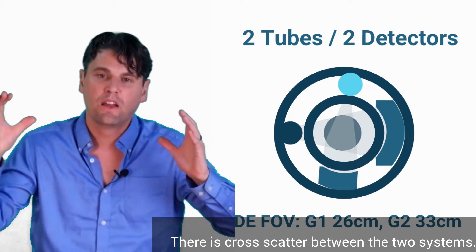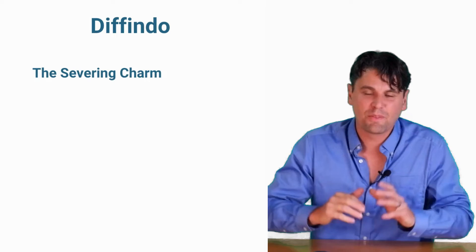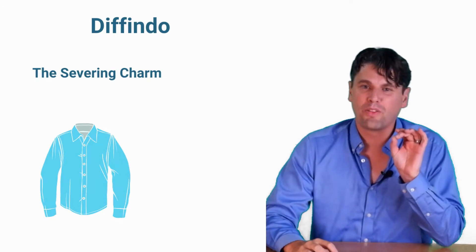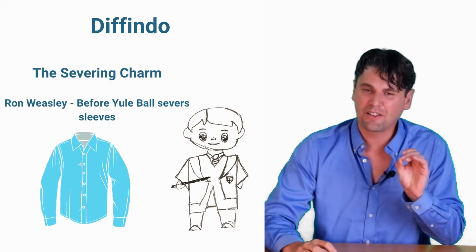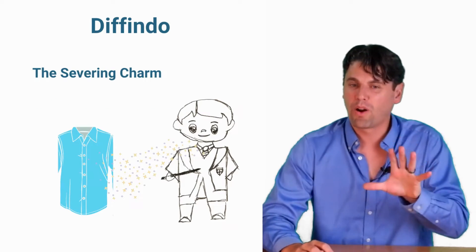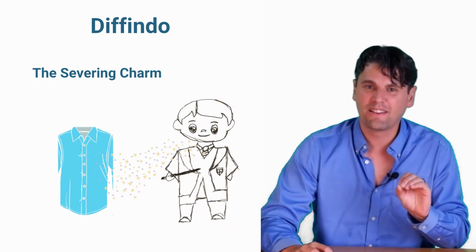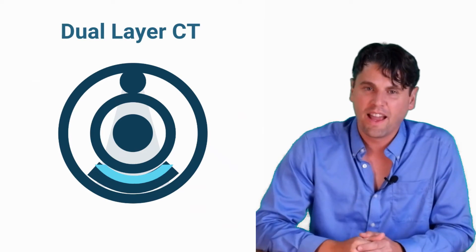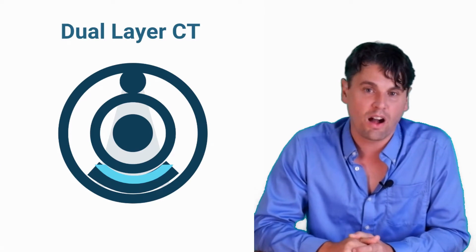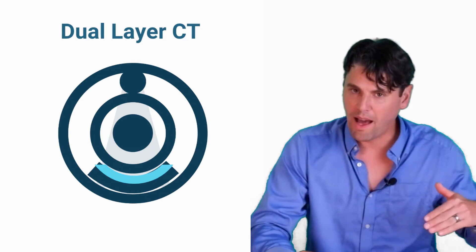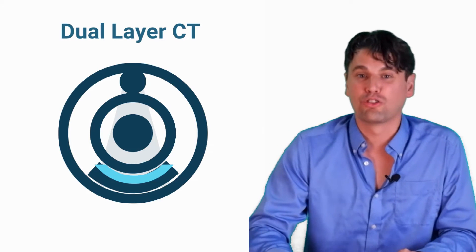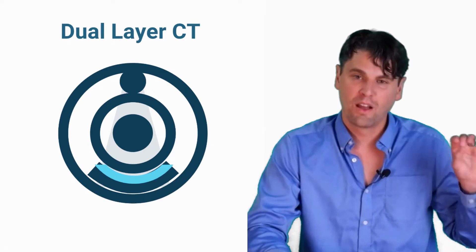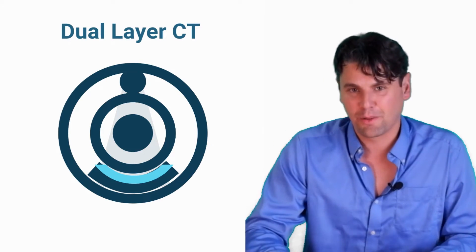Outside of that coverage, if you have a big lung region, you lose the ability to do dual energy imaging. The next spell is Diffendo — which Ron Weasley used to sever the sleeves of his shirt before the big ball. What if we did that to the x-ray detector? If you severed or cut your x-ray detector into two different layers and read those layers out, you could read out the lower energy x-rays first on the top layer, and on the bottom layer the higher energy x-rays. This is what we call dual layer CT, and it's different from all other approaches because you're changing something on the x-ray detector rather than the x-ray spectra.